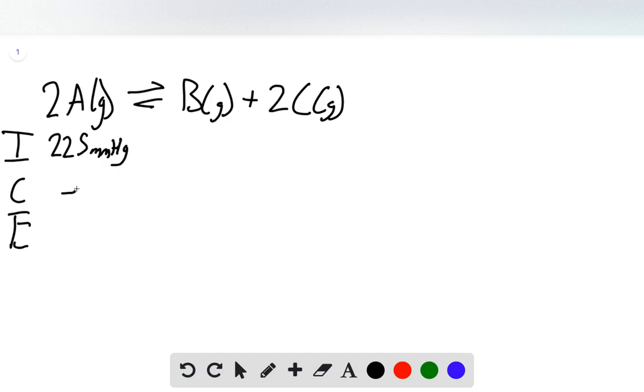Our change is minus 2X because of that 2 in front of the A. And so our equilibrium is 225 minus 2X. We start out with zero of each of these. We have X of B and 2X of C as the change, and so our equilibrium is the same.